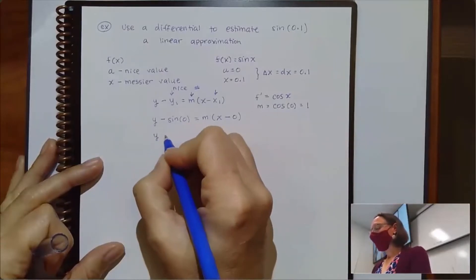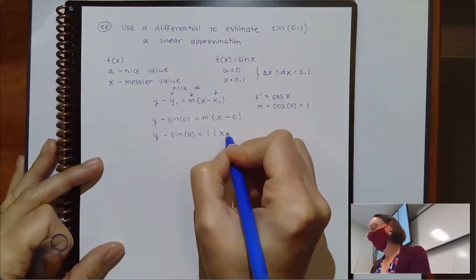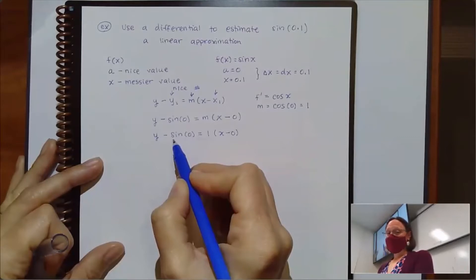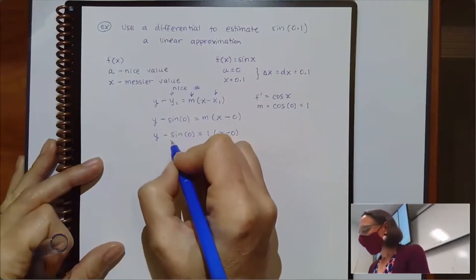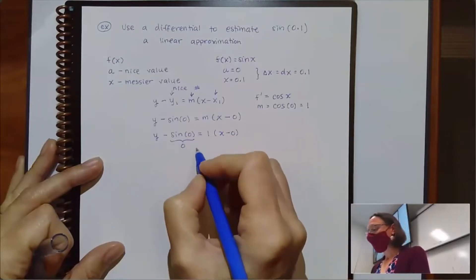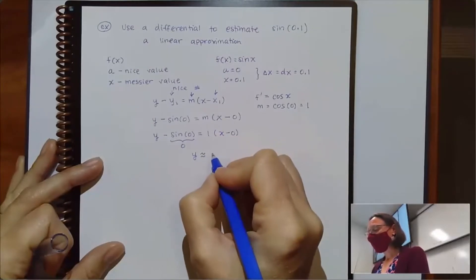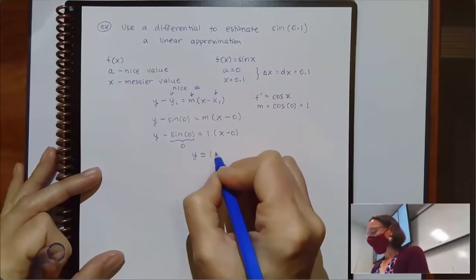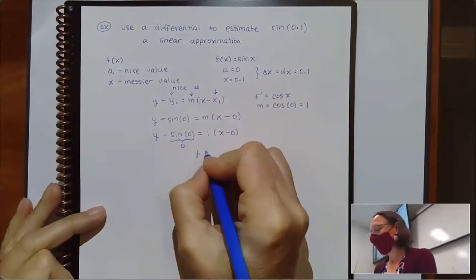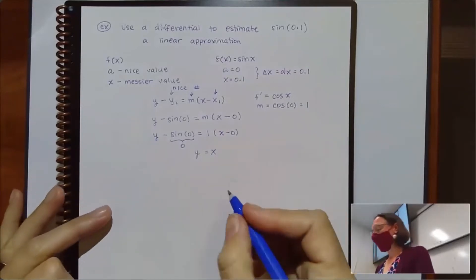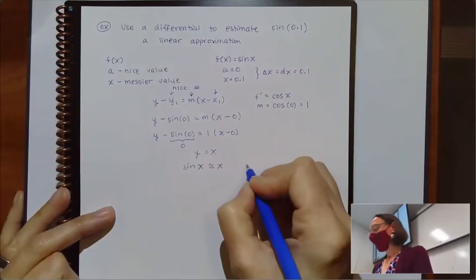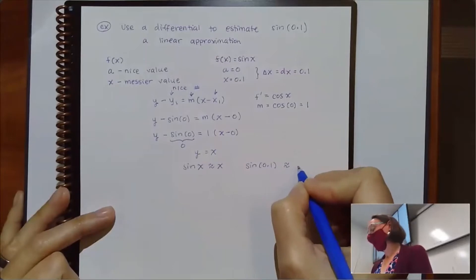So our linear approximation could look like y minus sine of 0 is equal to 1 times x minus 0. Sine of 0 is 0, which means y is approximately x. My actual equation of the tangent line would just be y equals x. So in terms of what we were trying to approximate, that means that sine of x is approximately equal to x. So sine of 0.1 is approximately 0.1.